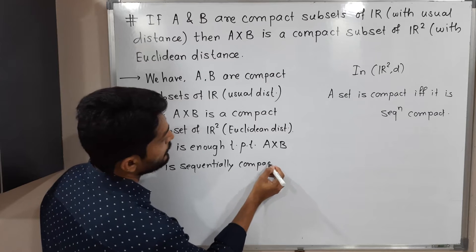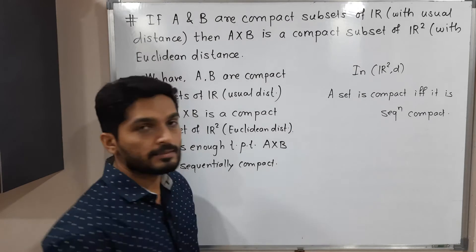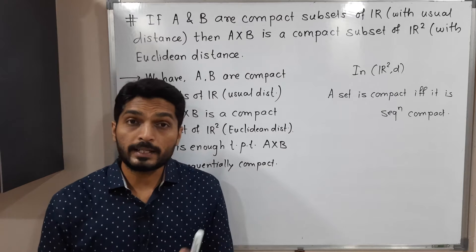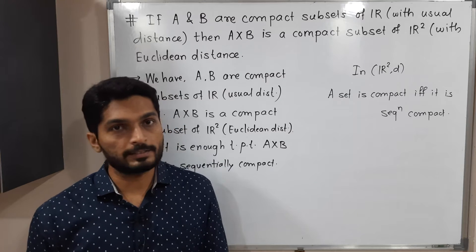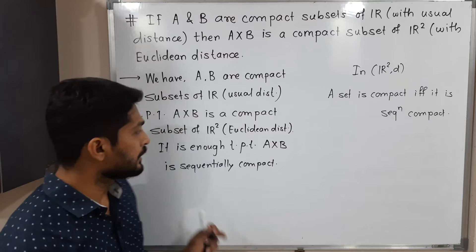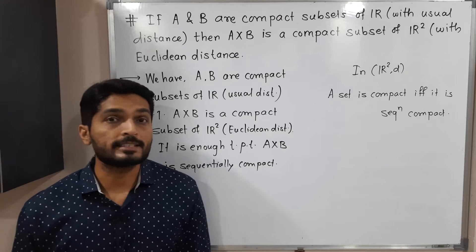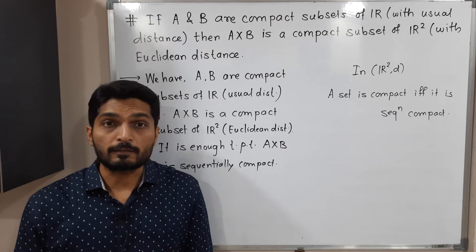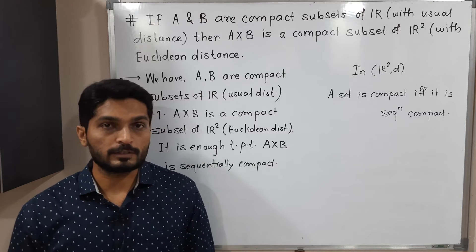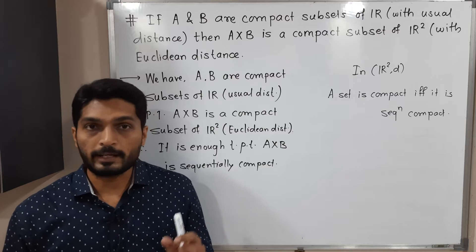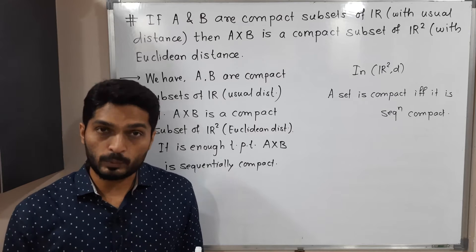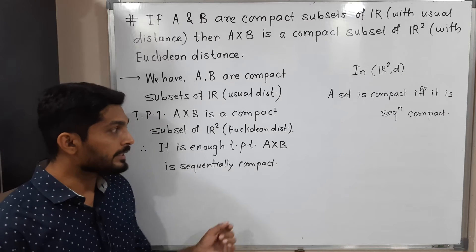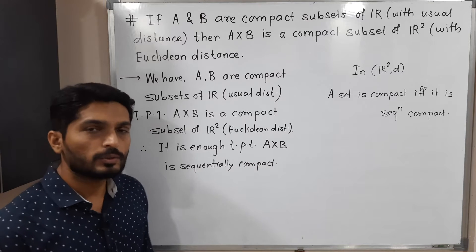This result is true for Rnd with Euclidean distance as well as for Rd with usual distance. Sequentially compact means every sequence should have a convergent subsequence, so we will take one sequence and prove that it has a convergent subsequence.